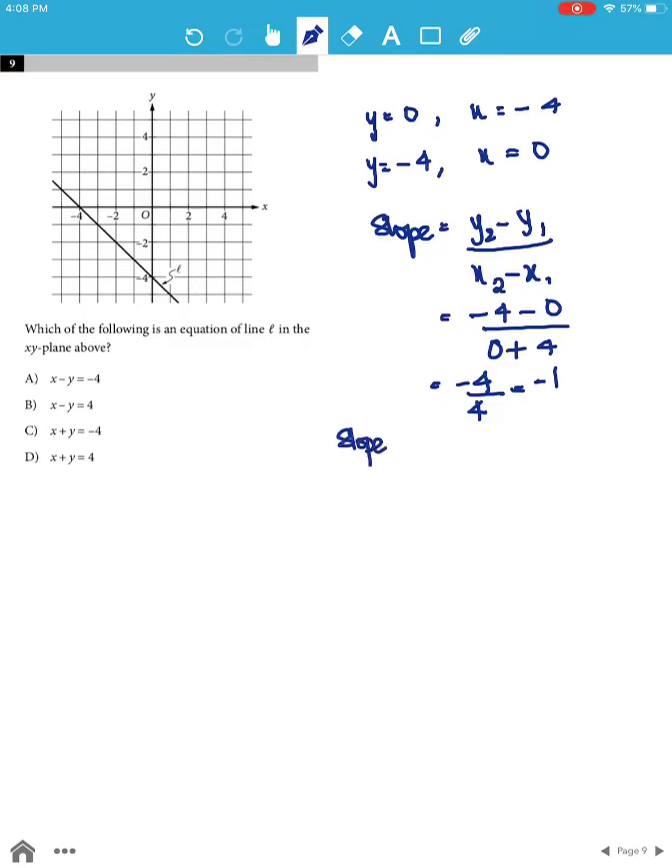Therefore, the slope m is negative 1. And we know the y-intercept, that is the point where the graph cuts the y-axis, that is c, is negative 4.